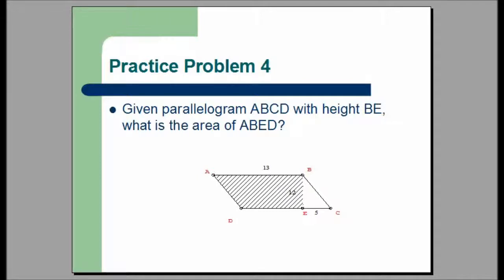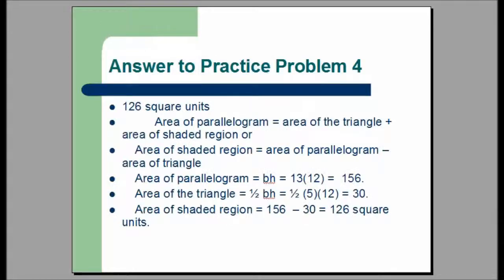Practice problem four: given parallelogram ABCD with height BE, what is the area of the shaded region ABED? The answer is 126 square units. The area of the parallelogram equals the area of the triangle plus the area of the shaded region, so the shaded region equals the area of the parallelogram minus the area of the triangle. The area of the parallelogram equals base times height, which is 13 times 12, which is 156. The area of the triangle is one half base times height, which is one half times 5 times 12, which is 30. Subtracting 30 from 156 gives 126 square units.